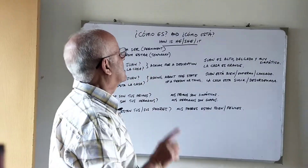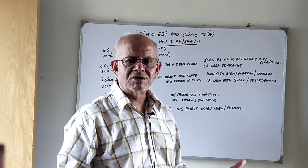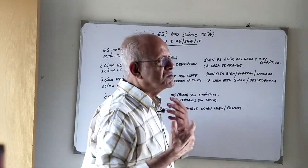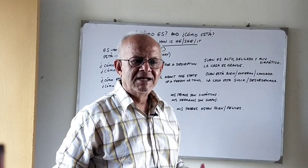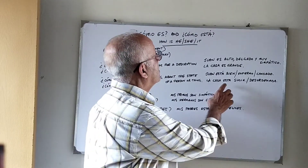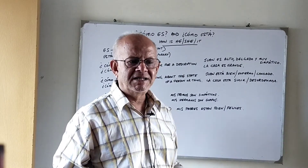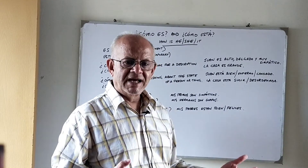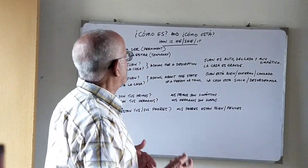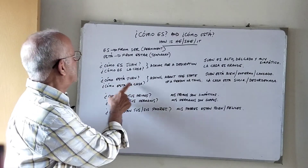Now Cómo está la casa? — we are asking about the condition and state of the house, which is a temporary situation. For example, la casa está sucia — the house is dirty, which is temporary because it can be cleaned. Or la casa está desordenada — the house is untidy — again it can be tidied up, so this is a temporary situation. For these we use the verb Estar.